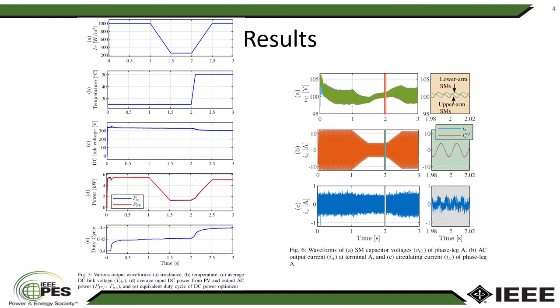So this slide shows the case study results from the simulations. The figure in the left shows the irradiance, temperature, and DC link voltage and input and output power of the FBMMC based PV system, and the results in the right show the three important control parameters of MMC operation, and they all look within the acceptable range.